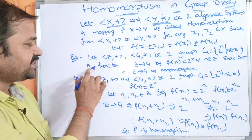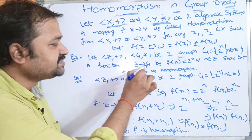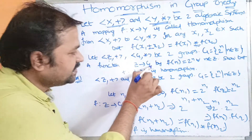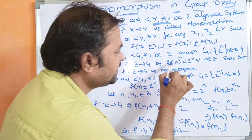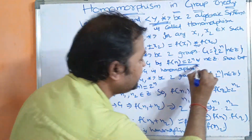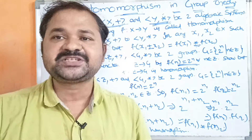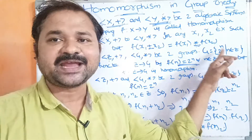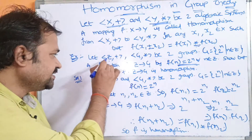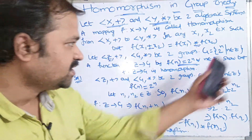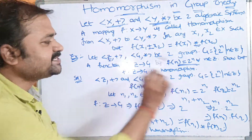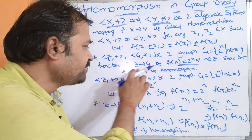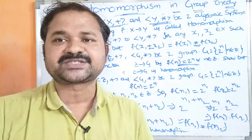The function is defined as f: ℤ → G by f(n) = 2ⁿ. In an examination the function will be given — here it is 2ⁿ such that n ∈ ℤ. We have to show that f from ℤ to G is a homomorphism.